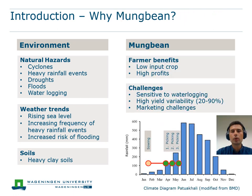In terms of efficiency, mung bean is an attractive crop for farmers. There is only low input required and market demand and prices are relatively high, leading to good potential profit. However, there are also drawbacks. Mung bean is very sensitive to waterlogging, which can lead to a high yield variability from 20 to 90 percent.